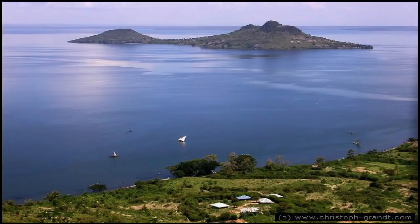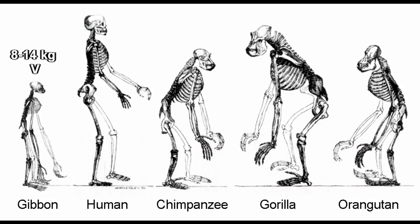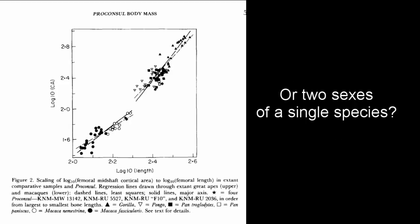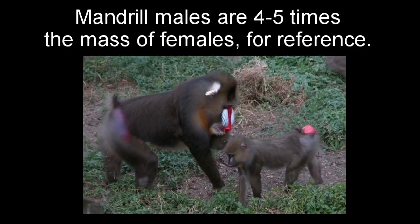Case in point: originally there was much debate on the Proconsul fossils at Rusinga Island. The fossils clustered into two sizes — one cluster ranging from 8 to 14 kilograms of body size, around the size of a siamang, and the other with a range of 28 to 46 kilograms, around the size of a chimpanzee. The original question was whether they represented two species of fossil ape — one small and one large — or a single, extremely sexually dimorphic species. If the latter were true, this would make Proconsul the most sexually dimorphic animal known to exist, with the largest males being nearly six times the size of the smallest females. Extensive work through the decades, both statistical and paleontological, has shown that there is indeed robust support for the presence of two species at the site.